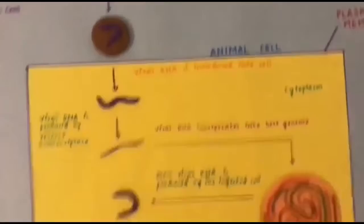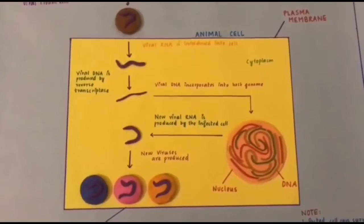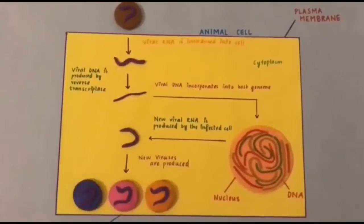Next, this is a retrovirus and the virus infects a normal cell. And this whole yellow color paper part is the animal cell. So the animal cell, when it is attacked by a retrovirus, the viral RNA is introduced into the cell.